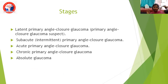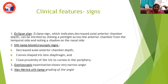Coming to stages: we have latent primary angle closure glaucoma (primary angle closure glaucoma suspect), subacute or intermittent primary angle closure glaucoma, acute primary angle closure glaucoma, chronic primary angle closure glaucoma, and absolute glaucoma. In clinical features, we have the eclipse sign, which indicates decreased anterior chamber depth. It is elicited by shining a pen light across the anterior chamber from the temporal side and noting a shadow on the nasal side. Slit lamp signs include decreased axial anterior chamber depth, convex-shaped iris-lens diaphragm, and close proximity of the iris to the cornea in the periphery.